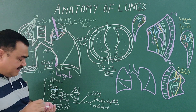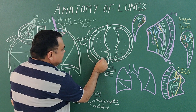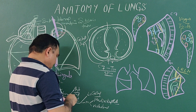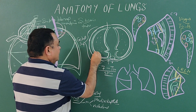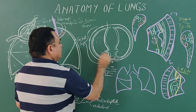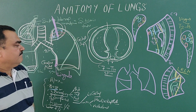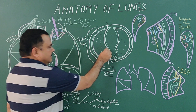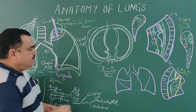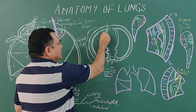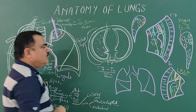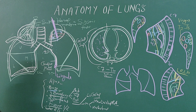Lymphatics: here superficial and deep lymphatics are present. Superficial lymphatics lie just below the visceral layer, and these lymphatics run just below the visceral layer — these are the superficial lymphatics, and they drain into the bronchopulmonary lymph node. The deep lymphatics are present in the substance of the lung, and they also drain into the bronchopulmonary lymph nodes. These are the lymphatic drainage of the lungs.